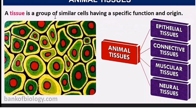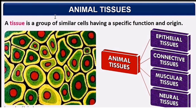Moving on, the very first topic is tissue. Tissue is a group of similar cells which perform a specific function. Animal tissues are of various types: epithelial tissue, connective tissue, muscular tissue, and neural tissue.